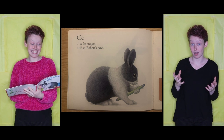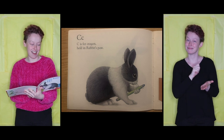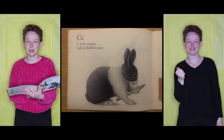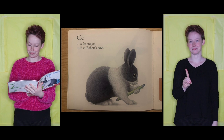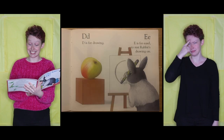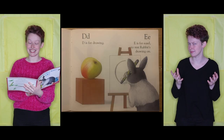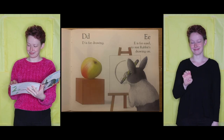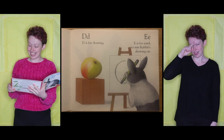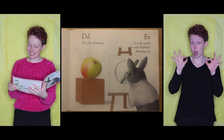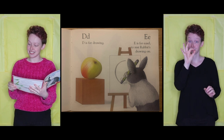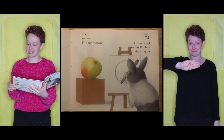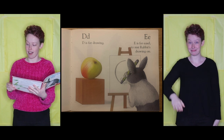C is for Crayon, held in rabbit's paw. D is for Drawing. E is for Easel, to rest rabbit's drawing on.